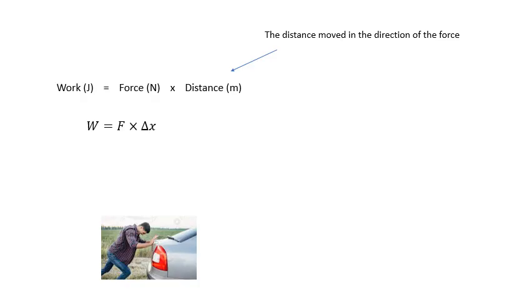How do we work out work? I mentioned this equation earlier on. Work equals force times distance. Again, from GCSE. Work in joules equals force in newtons times distance in meters, or W equals F times delta x. Delta means the change in the difference. The distance, by the way, has to be in the direction of the force. So it's work equals force times the distance moved in the direction of the force.